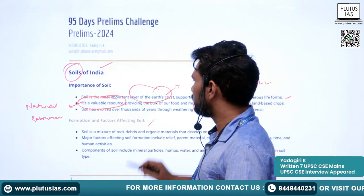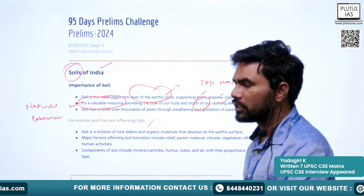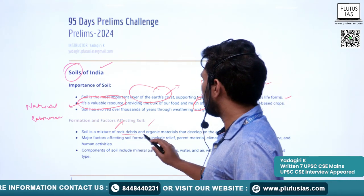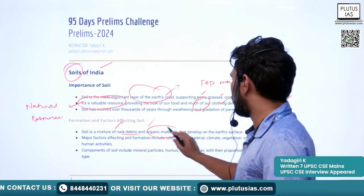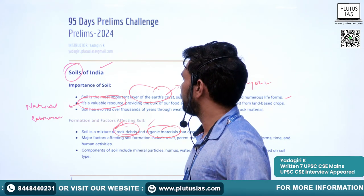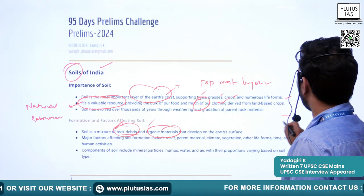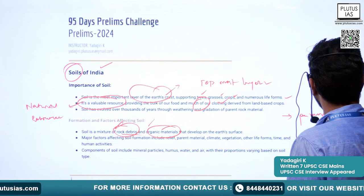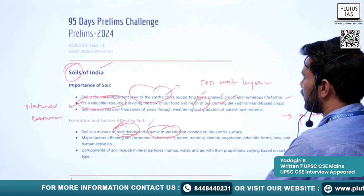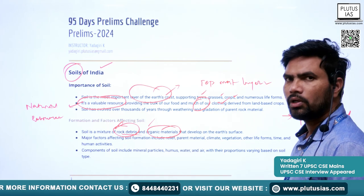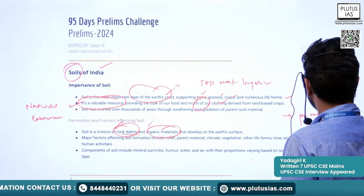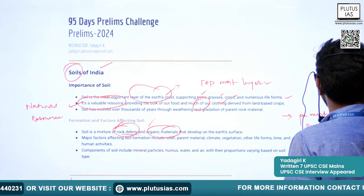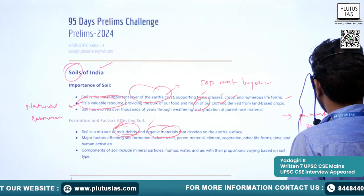Regarding the formation of soil and factors affecting it: soil is a mixture of rock debris and organic materials. These are the two major components — one is parent rock, also alternatively called rock debris, and the next one is organic matter or organic material.